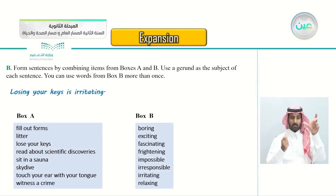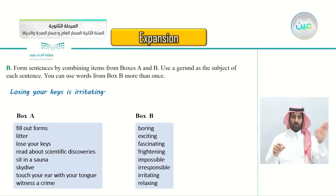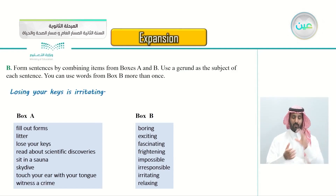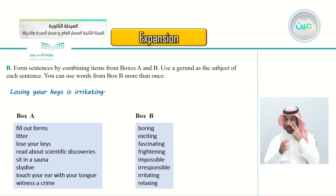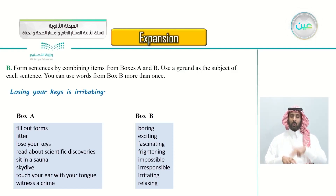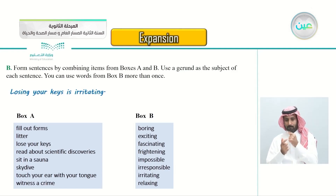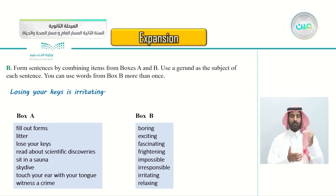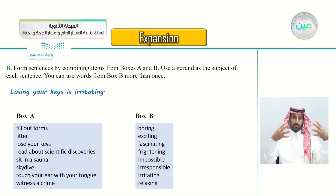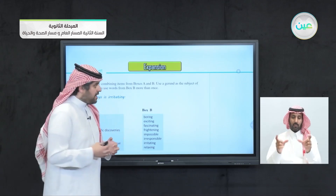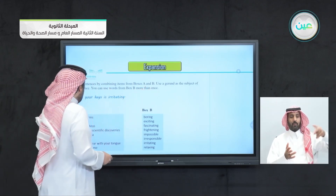Exercise B: form sentences by combining items from Box A and Box B. Box A includes: fill out forms, litter, lose your keys, read about scientific discoveries, sit in a sauna, skydive, touch your ear with your tongue, witness a crime. Box B includes: boring, exciting, fascinating, frightening, impossible, irresponsible, irritating, and relaxing. Use a gerund as the subject of each sentence. You can use words from Box B more than once.